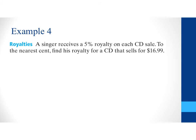Example 4 says a singer receives a 5% royalty on each CD sale. So again, this means that they get 5% of all sales for every CD that's sold. To the nearest cent find this royalty for a CD that sells for $16.99. So, this is very similar to the commission we're going to take that percentage multiply it by our dollar amount. So, I'm going to say R for royalties is equal to our 5% royalty which is .05 and we're going to multiply that by 16.99 and when we multiply this we get 85 cents.